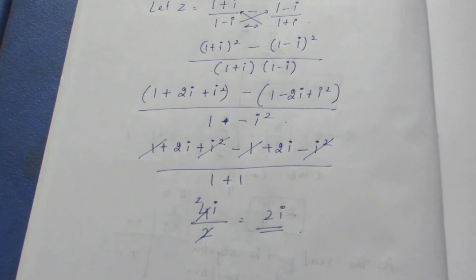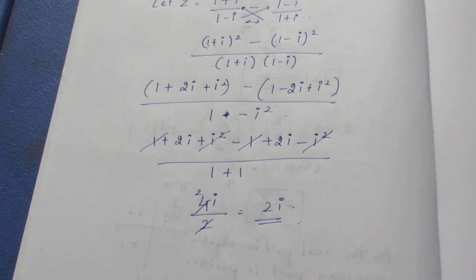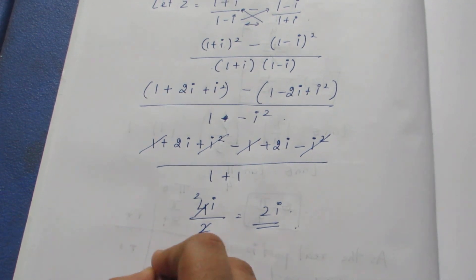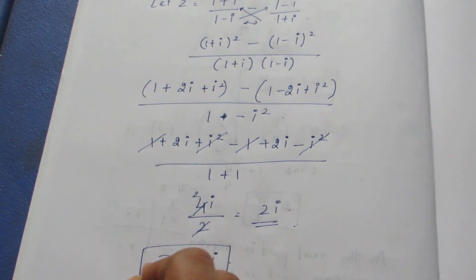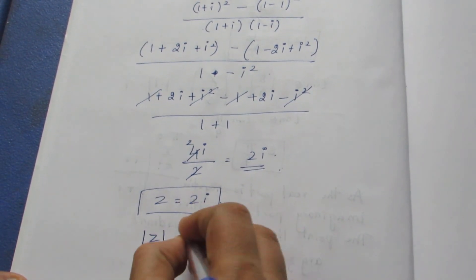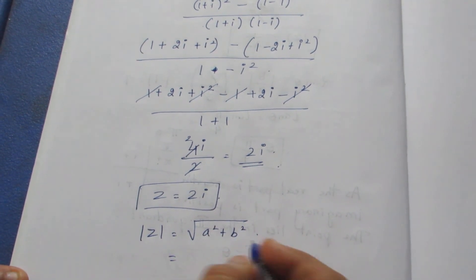So the final answer for z is 2i. They have asked to find the modulus of z. For modulus of z, we know the formula to be square root of a² plus b², where a is the real part and b is the imaginary part.